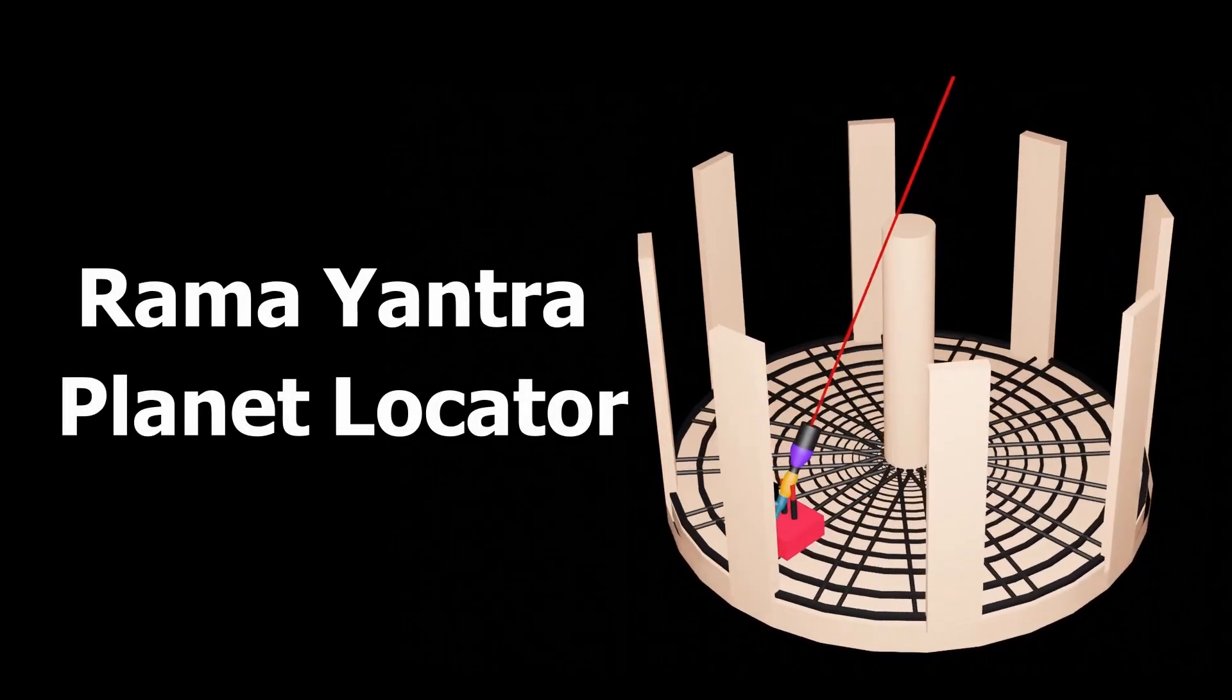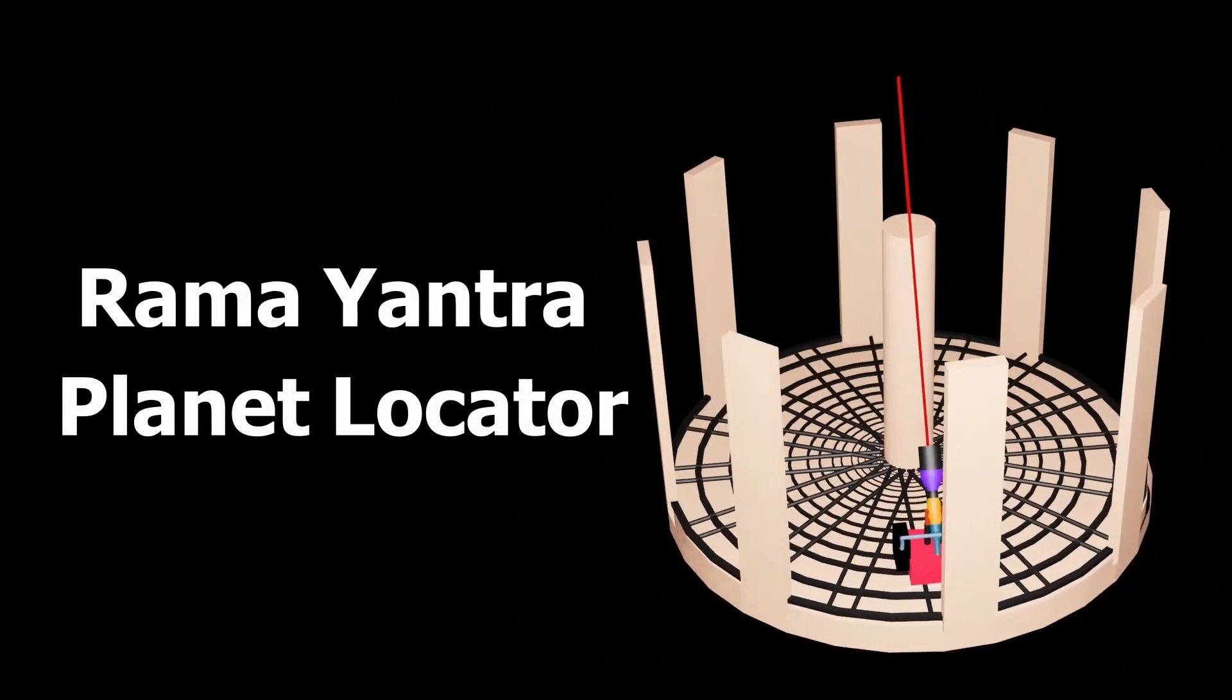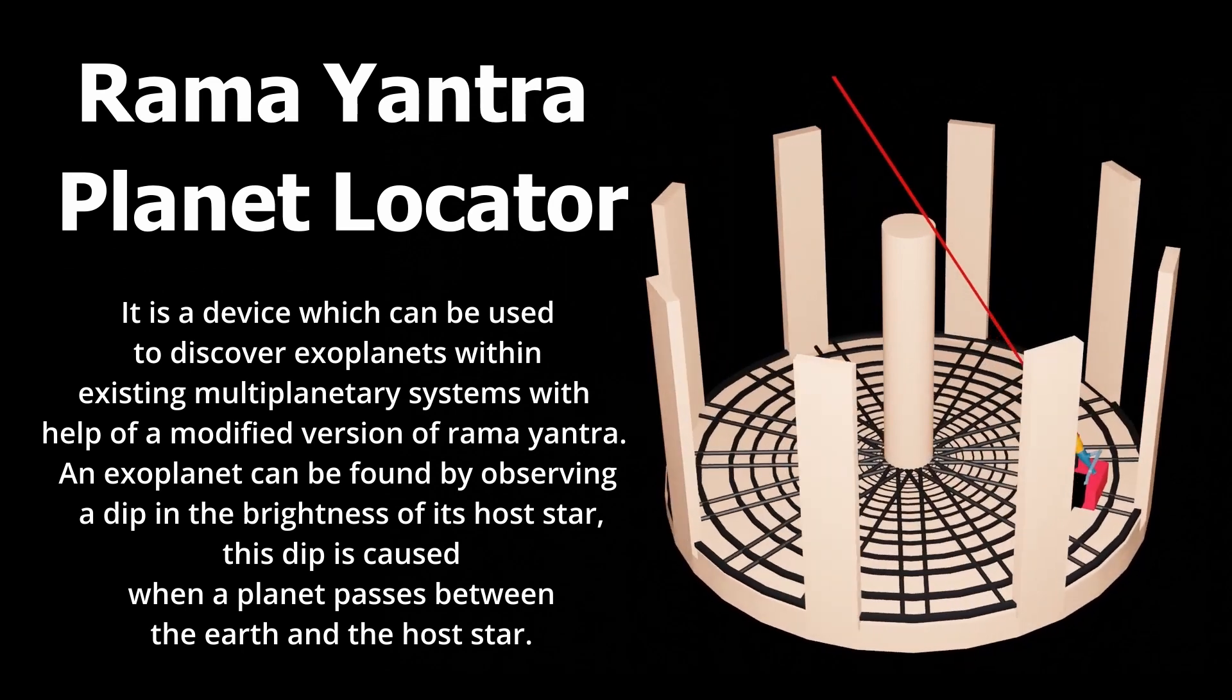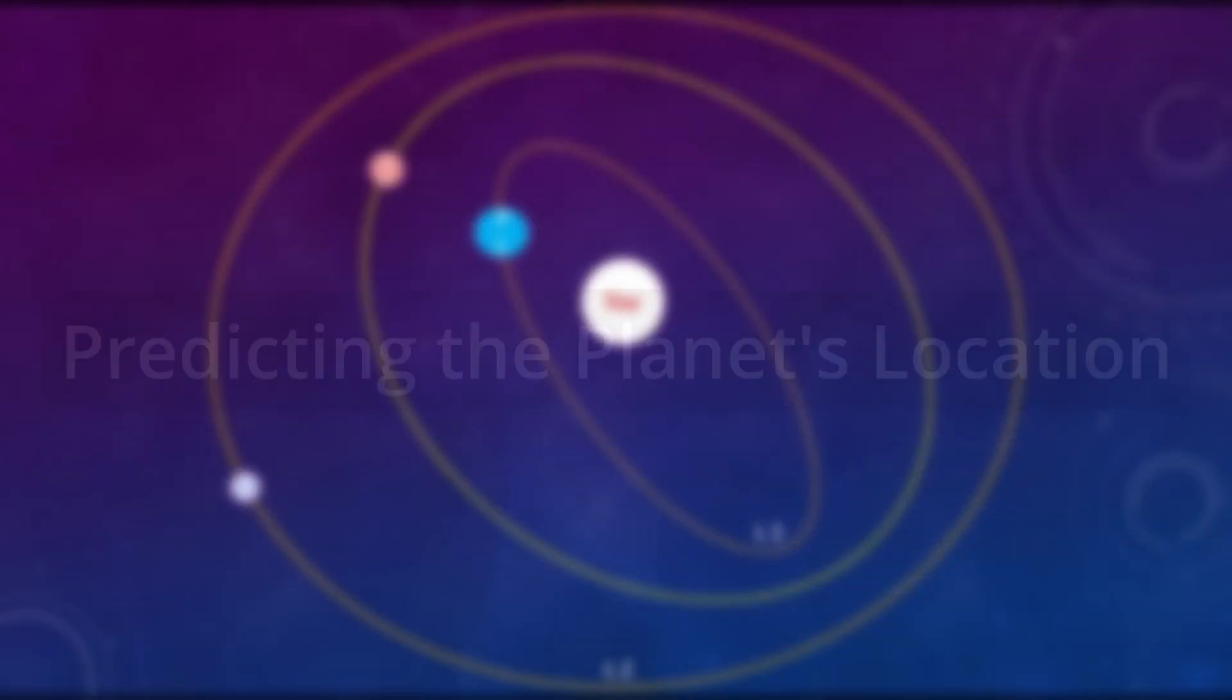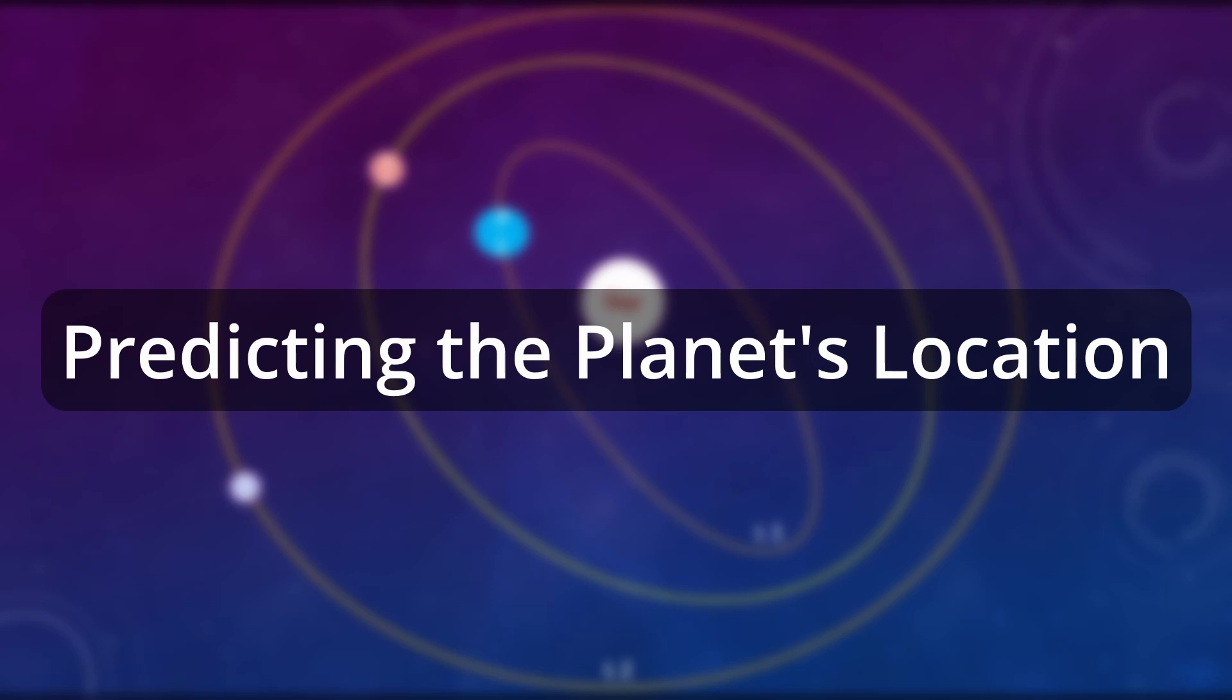Ramayantra Planet Locator is a device which can be used to discover exoplanets in existing multi-planetary systems with help of a modified Ramayantra. Now let us see how we can predict the position of an exoplanet.